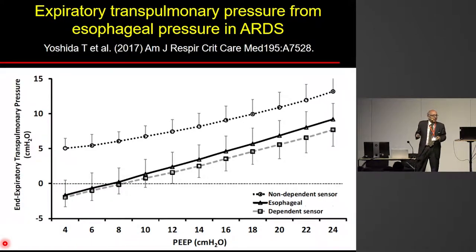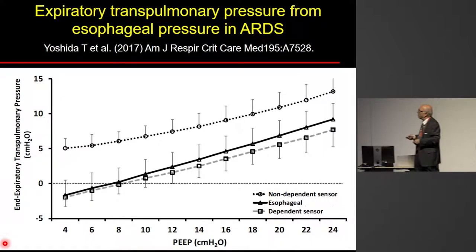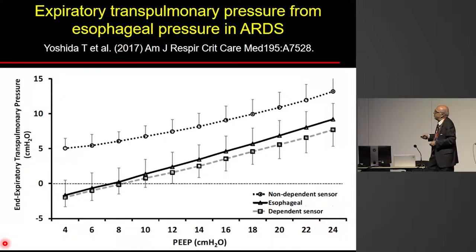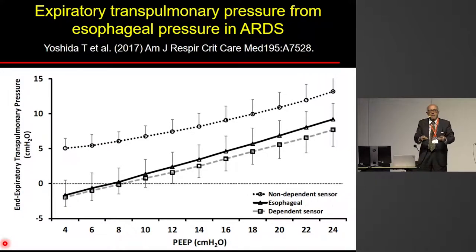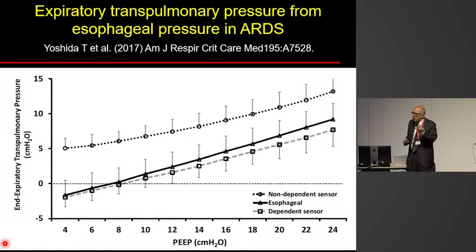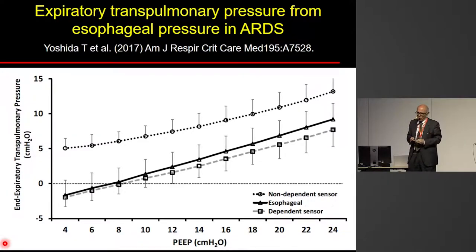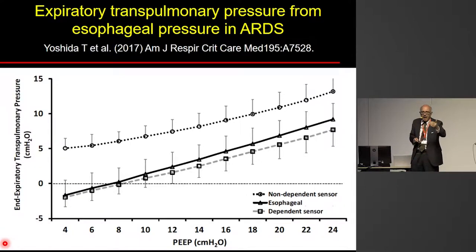Other studies — including an abstract from a group that I believe will be published soon — compared non-dependent and dependent sensors with esophageal pressure at end expiration at different PEEP levels. Differently from our study, they showed that the esophageal pressure seems to be parallel to the pressure in the most dependent part of the lung. So it is not really clear whether the esophageal pressure truly estimates pleural surface pressure, or whether it is more associated with non-dependent or dependent lung regions.